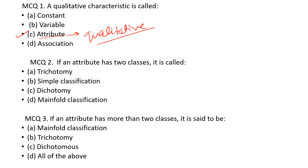Question number 2: if an attribute has two classes, it is called dichotomous. If an attribute has more than two classes, it is said to be manifold or multiple.